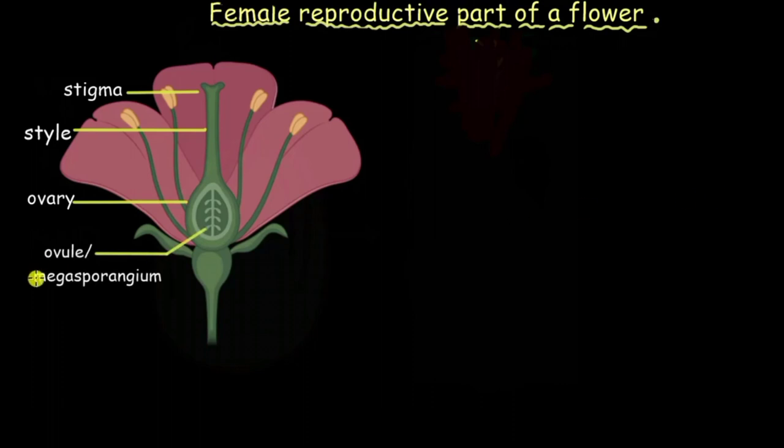And it has also got a fancy name called megasporangium. Now sporangium means the area or the place which will develop into a spore.